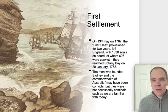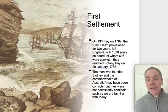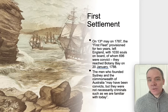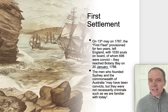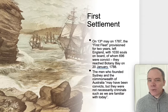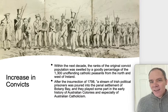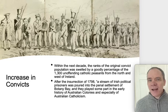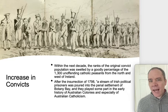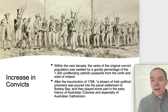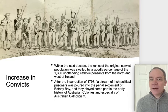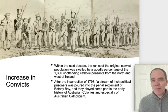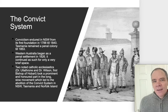On the 13th of May 1787, the first fleet provisioned for two years left England with 1,030 souls on board, of whom 696 were convicts. They reached Botany Bay on the 20th of January 1788. The men who founded Sydney and the Commonwealth of Australia may have been convicts but they were not necessarily criminals such as what we are familiar with today. Within the next decade, the ranks of the original convict population was swelled by a goodly percentage of 1,300 unoffending Catholic peasants from the north and west of Ireland. After the insurrection of 1798, a stream of Irish political prisoners poured into the penal settlement of Botany Bay, and they played some part in the early history of Australian colonies and especially of Australian Catholicism.